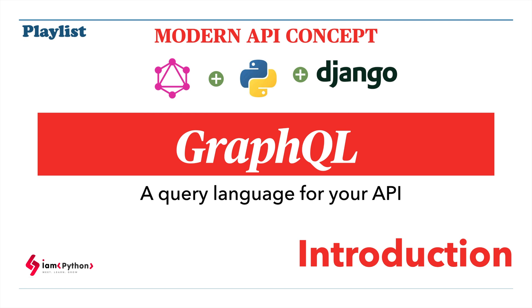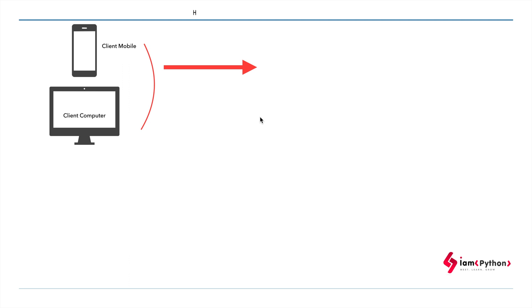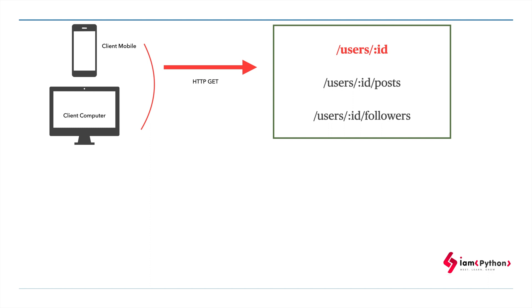Now let's try to understand the problem statement. Let me take one scenario to explain in a better way. A user is using some application - they can use that application via mobile as well as computer, that is the client side. The user makes an HTTP request that gets sent to the API. These APIs have endpoints. For example, if I want user ID ABC123 details, I will call the endpoint: user slash ABC123 to get that particular user's information.